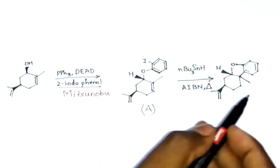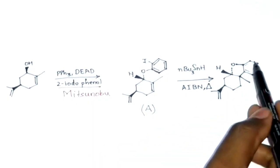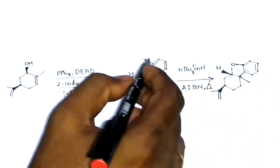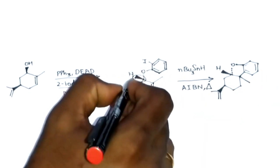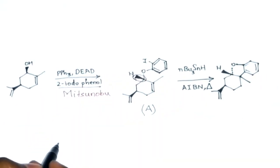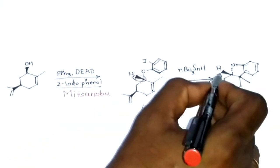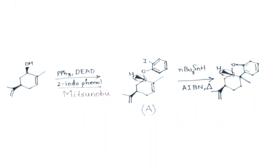After the reaction, we get this product. If you look at the stereochemistry here, it is above the plane of the paper. The stereochemistry over here is also above the plane of the paper.